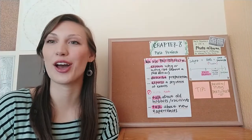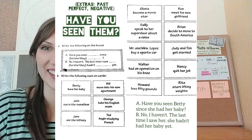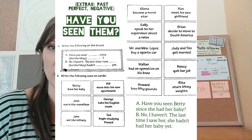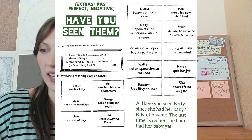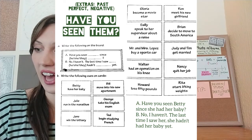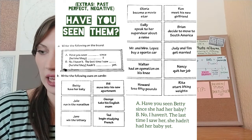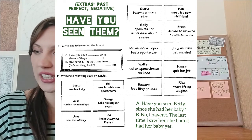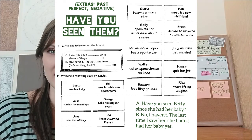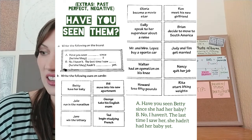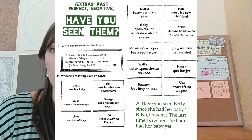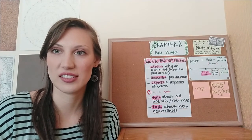We have one more activity for today called 'Have You Seen Them?' You should see on your screen the structure of a sample conversation. Let me read you the example. A: Have you seen Betty since she had her baby? B: No, I haven't. The last time I saw Betty, she hadn't had her baby yet. You have lots of different examples of people and actions to complete different types of this same conversation.